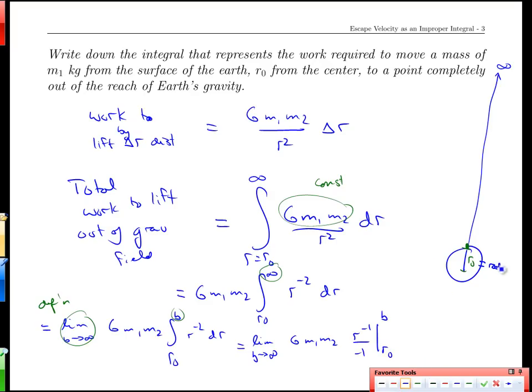That's where we would start our slices when we start lifting our object a little bit off the surface and out towards space. All right, we do that, and then now we can finish it off here. Let's do it as the limit as b goes to infinity, GM1 M2, and what we're going to get here is negative 1 over b minus negative 1 over r0.